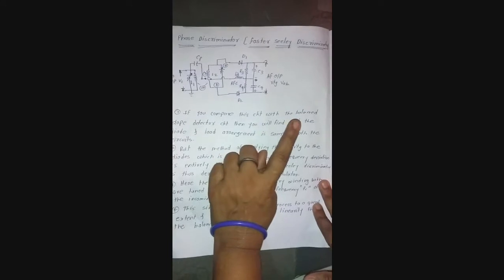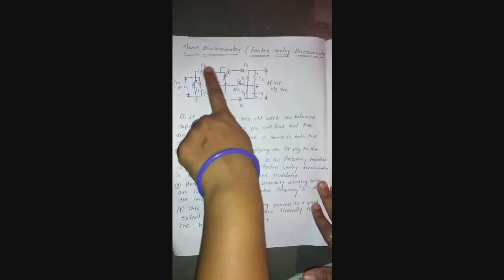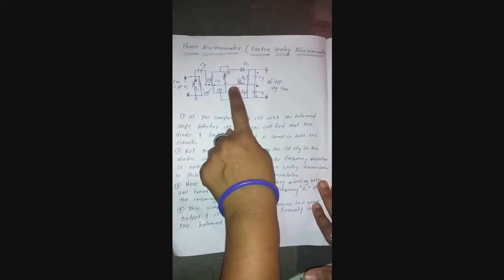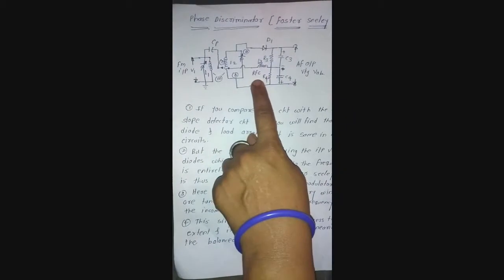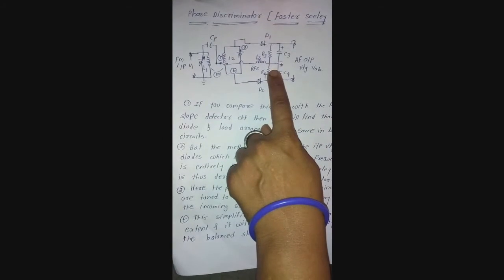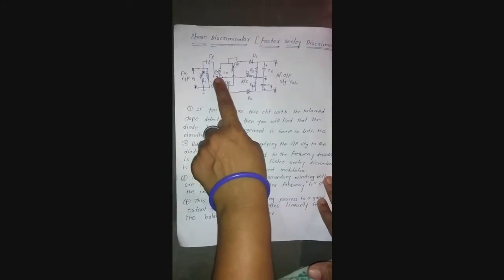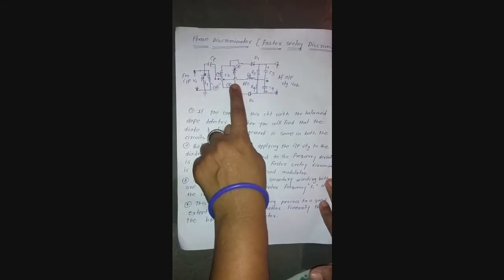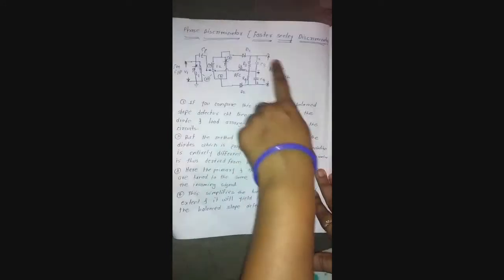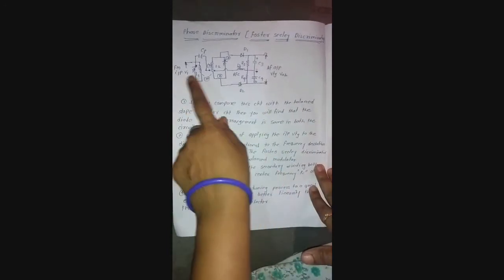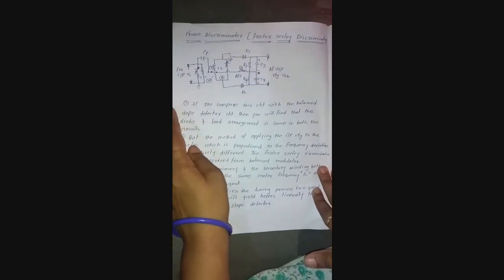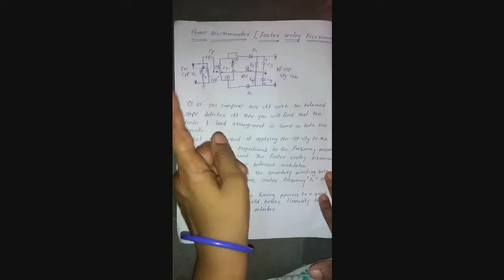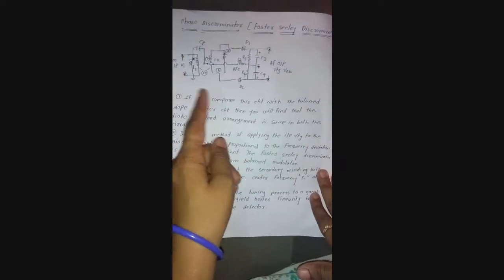Observing the circuit diagram of the Foster-Seeley discriminator, it involves structures similar to the balanced slope detector. The simple slope detector one and simple slope detector two, when combined, form the balanced slope detector. One key difference between the balanced slope detector and the phase discriminator is that the Foster-Seeley discriminator has inputs present at different phases — all inputs applied to the Foster-Seeley discriminator are out of phase with each other.